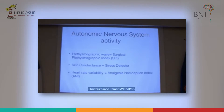We're going to assess three monitors that use autonomic nervous system activity: the SPI, which uses plethysmography in a pretty smart way; skin conductance; and heart rate variability.